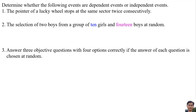Number 1. The pointer of the lucky wheel stops at the same sector twice consecutively. The probability of the first stop does not affect the probability of the second stop. So they are independent events.